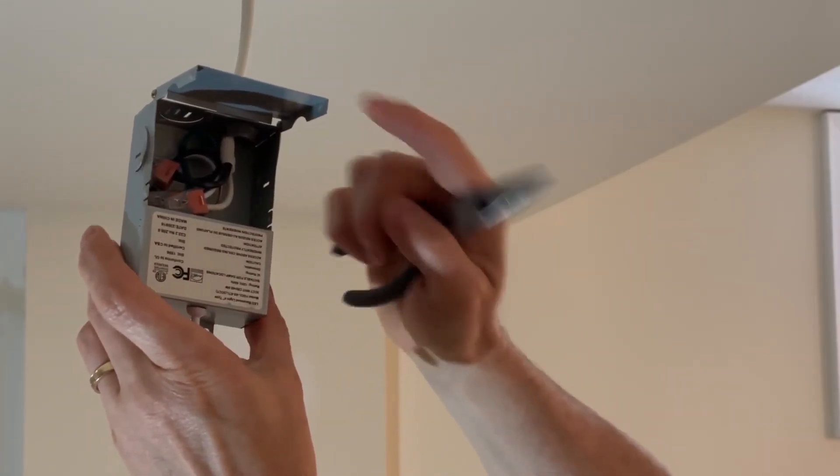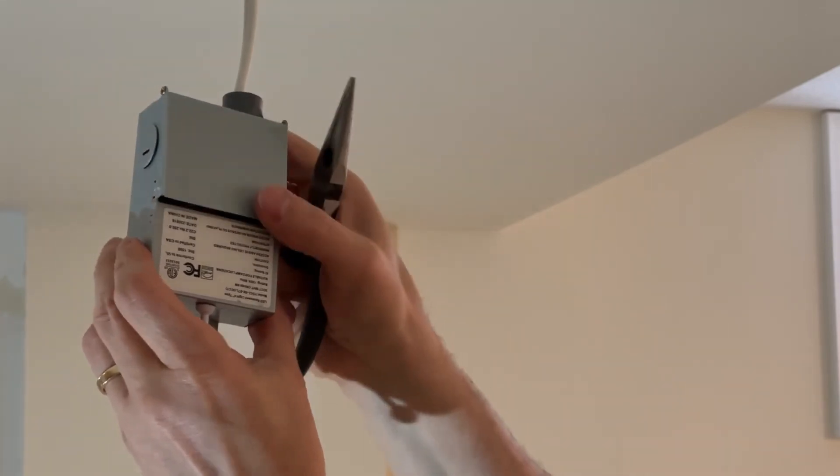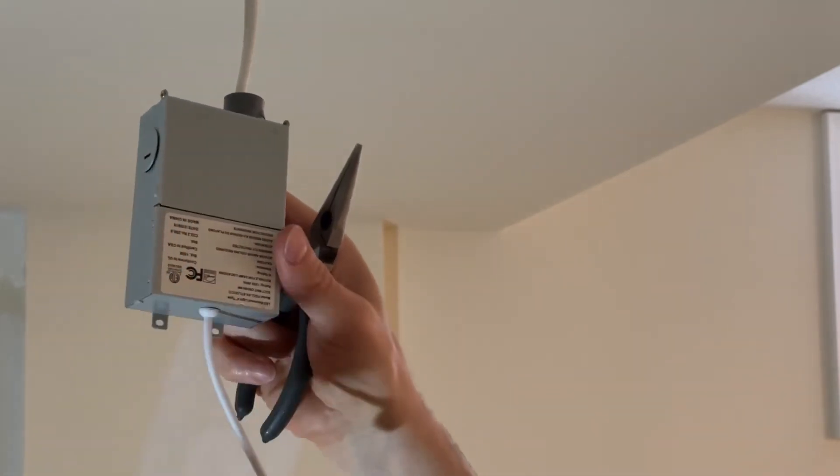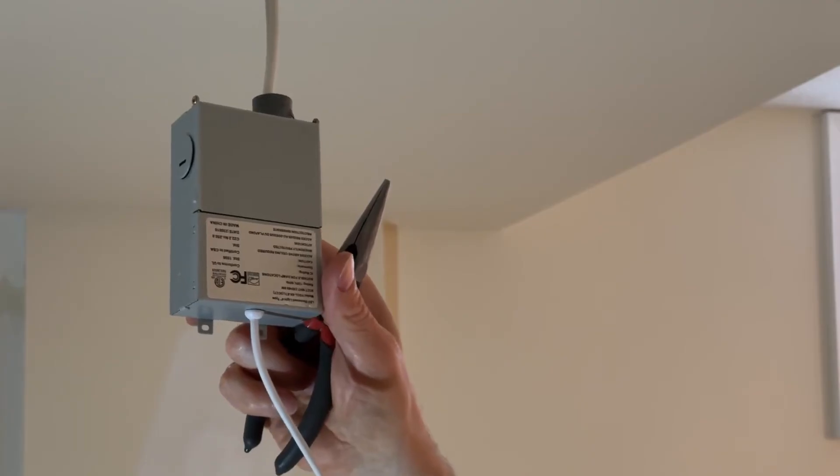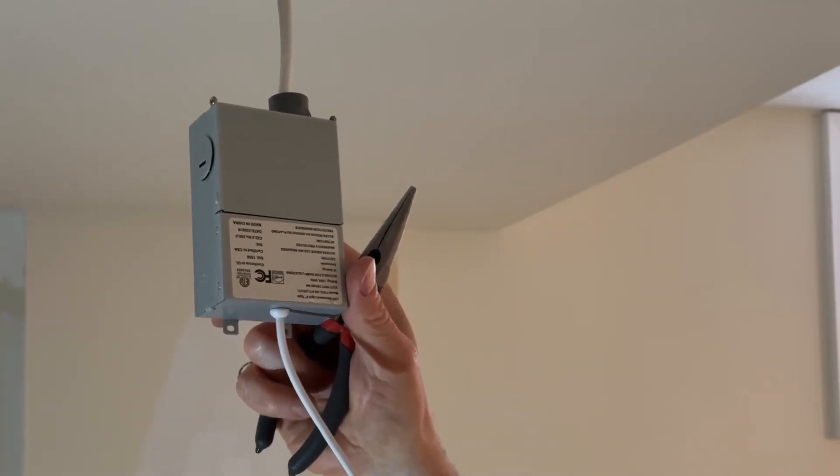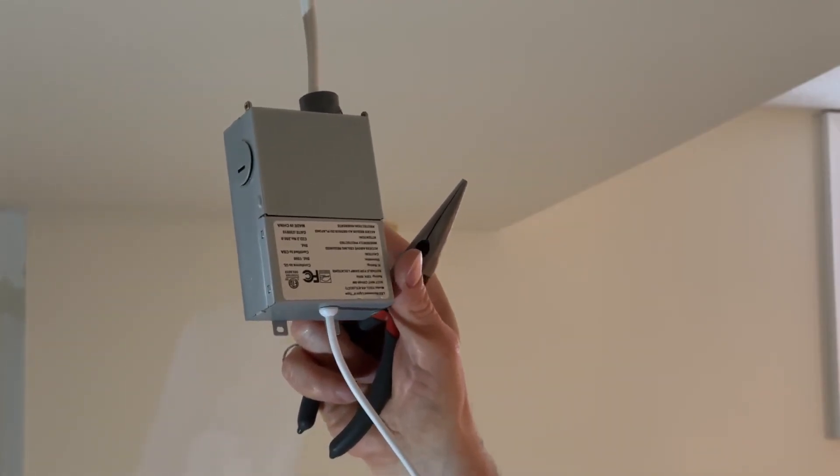I've set the temperature. Make sure you do that before you close the lid. Now we can close the lid. Once the lid is closed, we can test the light. And when it's tested, we can push it back up in the hole.